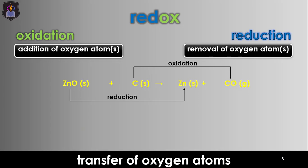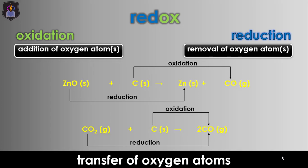Similarly, in the reaction between carbon dioxide and coke to form carbon monoxide gas, the carbon is oxidized to carbon monoxide because it gained an oxygen atom from carbon dioxide gas, while the carbon dioxide gas is reduced to carbon monoxide because it lost an oxygen atom to carbon. The occurrence of oxidation and reduction in these two reactions make them redox reactions.